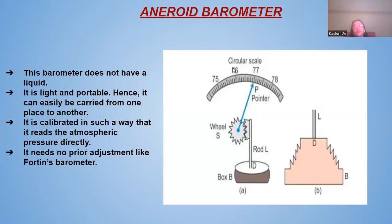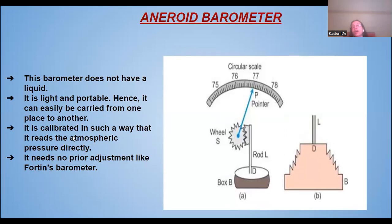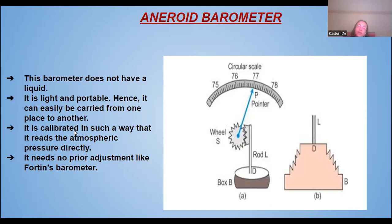Now we come to the aneroid barometer. This barometer does not have a barometric liquid. The main difference between the simple/Fortin's barometer and the aneroid barometer is that the aneroid barometer does not use liquid. It is very light and portable — it can be carried from one place to another. It is calibrated so that it reads the atmospheric pressure directly, and it needs no prior adjustments.